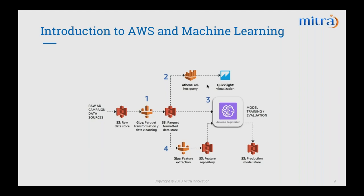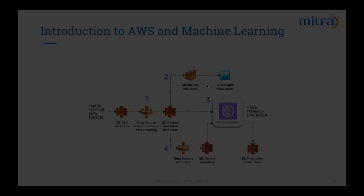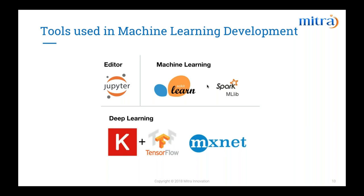Now let's look at the tools used when building a machine learning model. In SageMaker, we use an editor called Jupyter Notebook — a web-based editor where you can run and execute Python commands and share it among peers as a web link. For general machine learning we can use scikit-learn or Spark. For deep learning, we can use Keras, TensorFlow, or MXNet. These tools are not limited to just these options. AWS uses containerization — all models and algorithms are containerized — so we can pre-package any machine learning framework.